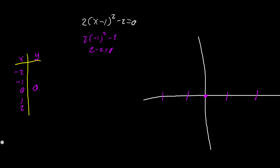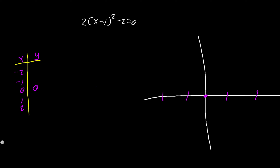We're also going to look at x = 1: we get 1 - 1 which equals 0, and 2 times 0 is of course 0, so we're left with negative 2. So when x = 1, y = -2. When x = 2, we have 2(1)² - 2, which gives us another solution of 0.